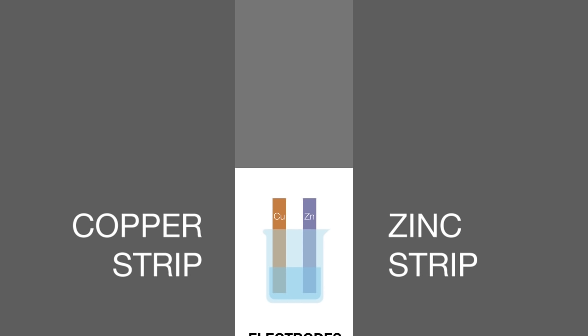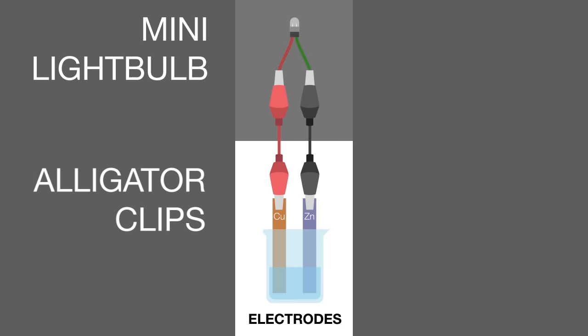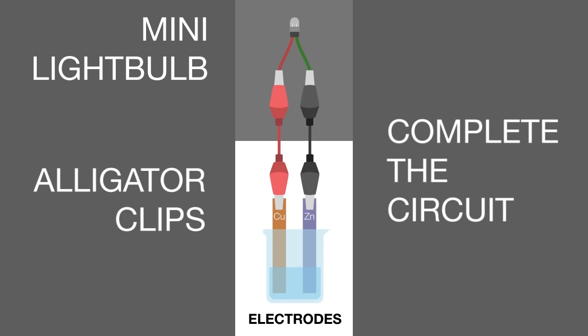These will act as electrodes. Using two alligator clips, connect one strip to one end of the mini-light bulb, and another strip to the other end to complete the circuit.